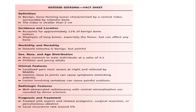The lesion involving the spine can cause painful scoliosis — a curvature of the spine. Radiographic findings show a well-demarcated radiolucency with central mineralisation surrounded by dense sclerosis. Treatment: first-line is aspirin or related analgesics; surgical options include resection or percutaneous ablation with radiofrequency coagulation. Local recurrence occurs in approximately 5% of cases.